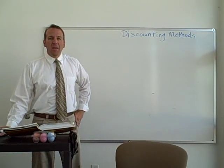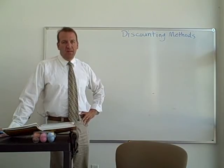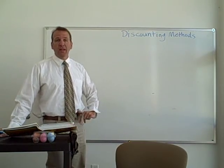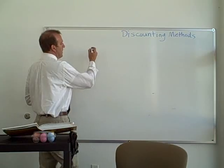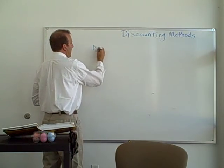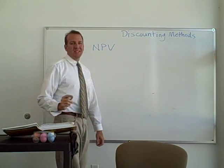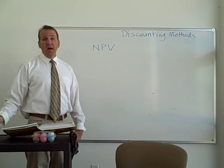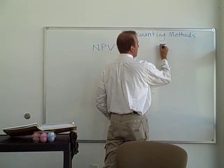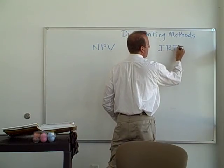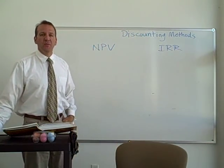We've been talking about the capital budgeting methods, and we've looked at the non-discounting methods. Now, in this video, we're going to look at the discounting methods. The first discounting method I'm going to abbreviate as NPV — in your chapter, it's the net present value. The other method we're going to look at is called the internal rate of return, IRR.